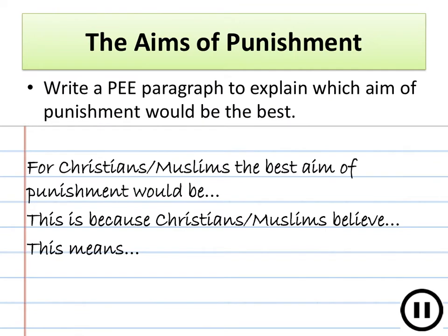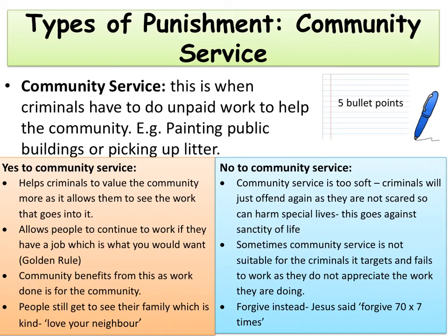Think about the aims of punishment we've been looking at and write a PEE paragraph to explain which aim of punishment you think would be the best. Try to think of it from a Christian or Islamic perspective and use the sentence on the screen to help you out. Pause the video now and play again once you've finished. Now that we've looked at the aims of punishment we need to look at the types of punishment that can be given to criminals. There are many different types of punishment used in various countries around the world, and we need to concentrate on four main ones and look at the advantages and disadvantages of each.